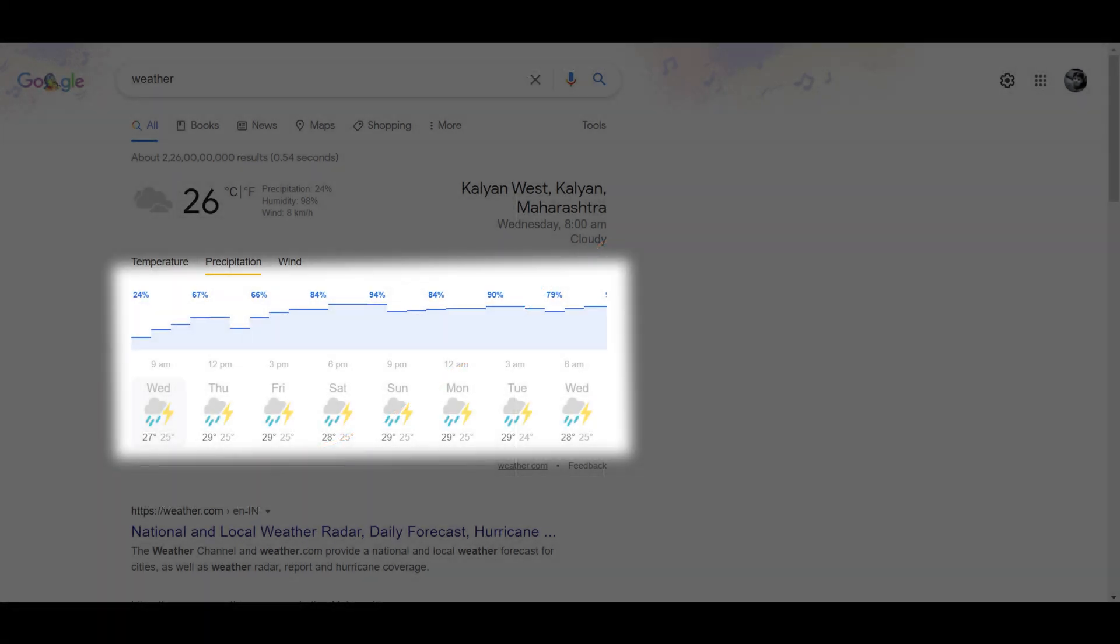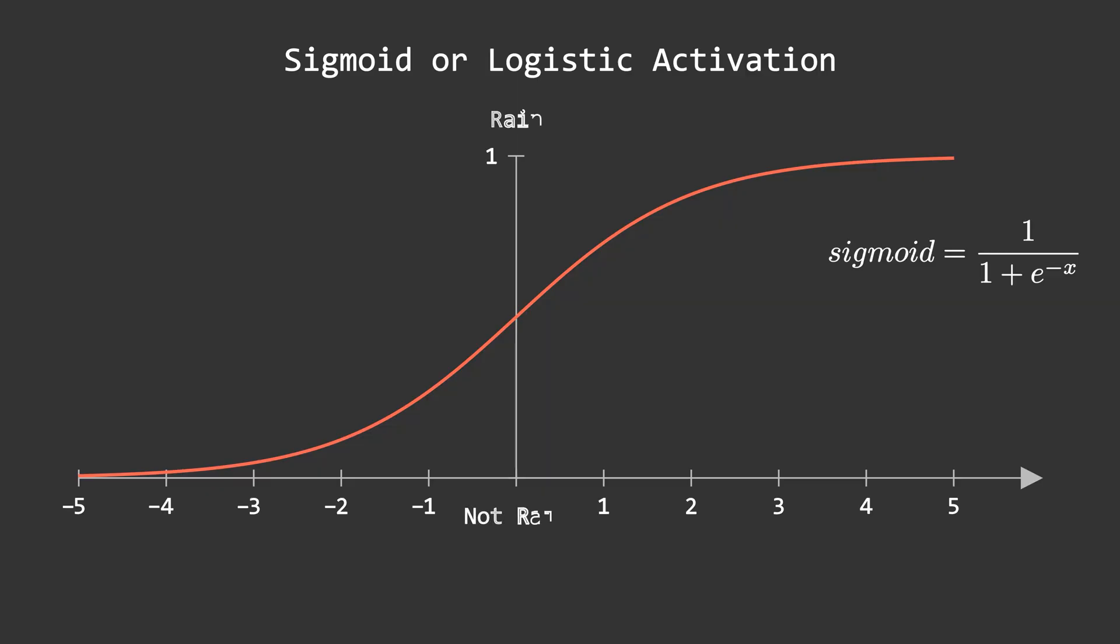And because of this phenomenon, sigmoid activation is used for classification. At the start of this video, we saw a classification example in which our model has to decide whether it will rain or not rain. Suppose 0 means it will not rain and 1 means it will rain.